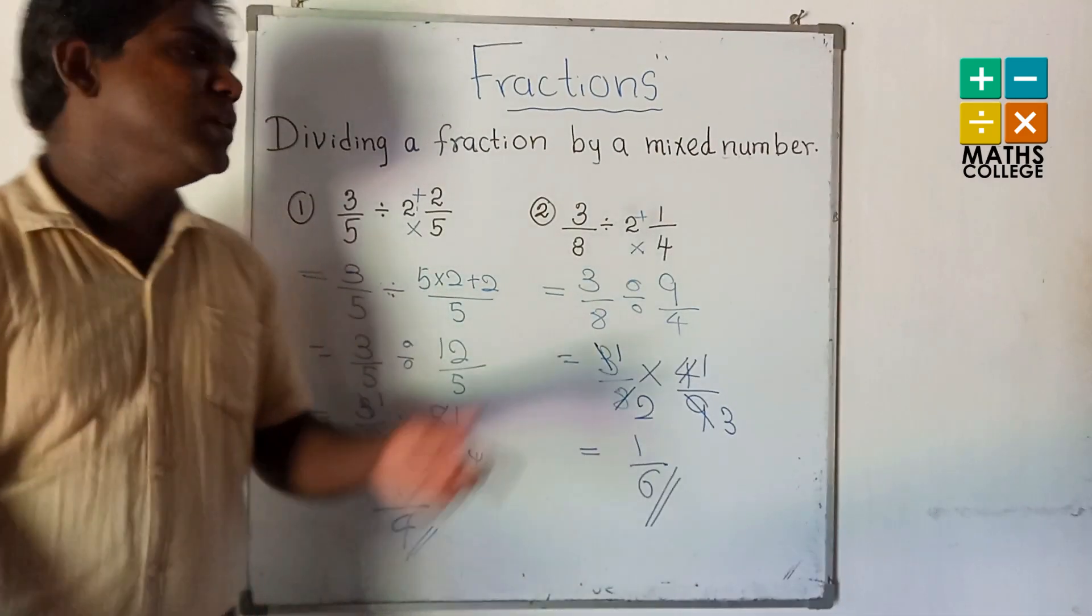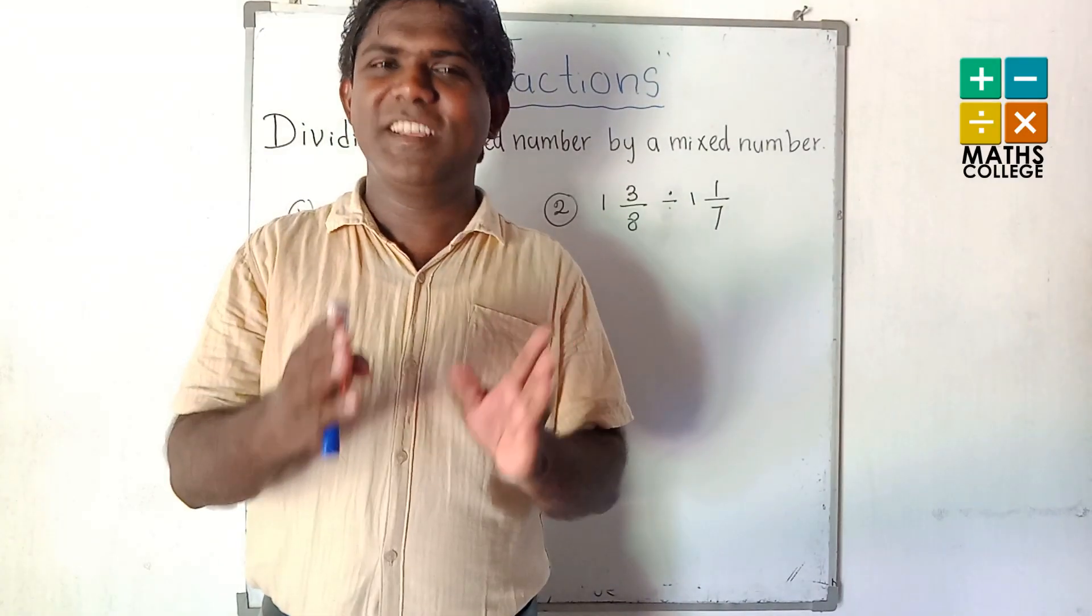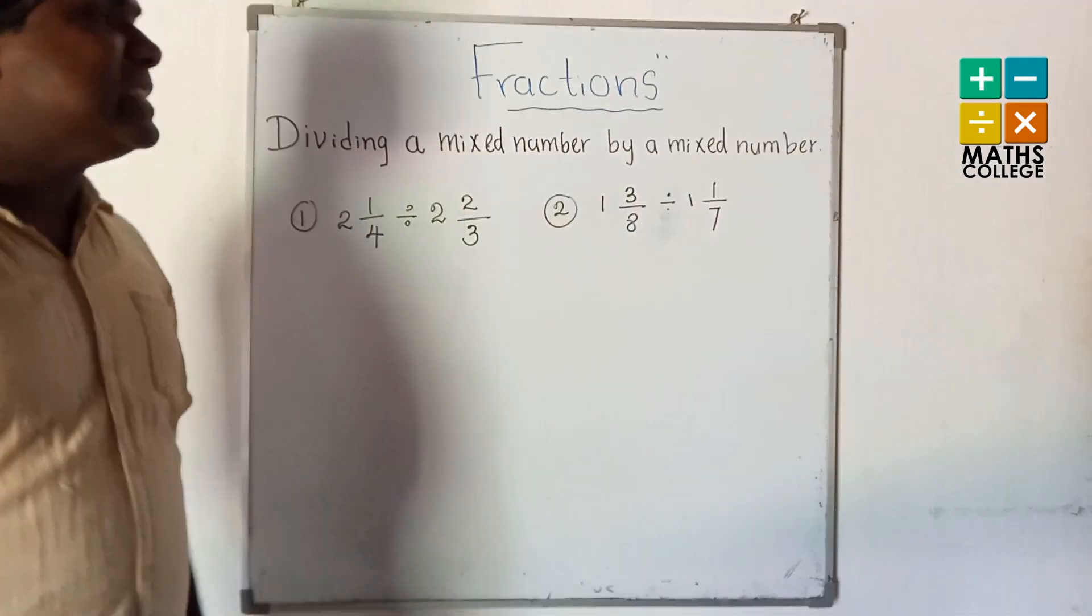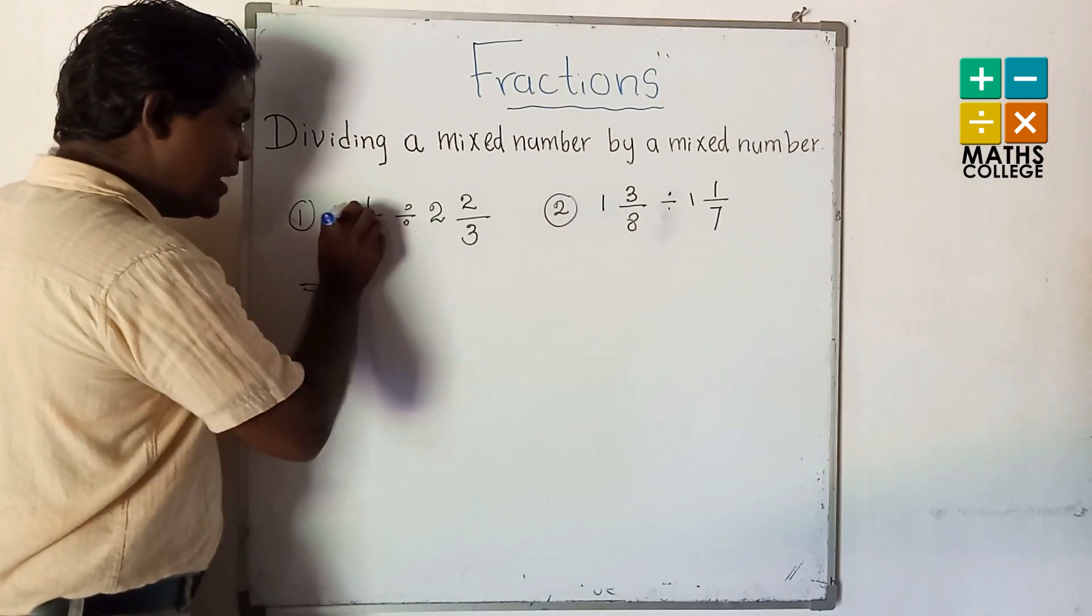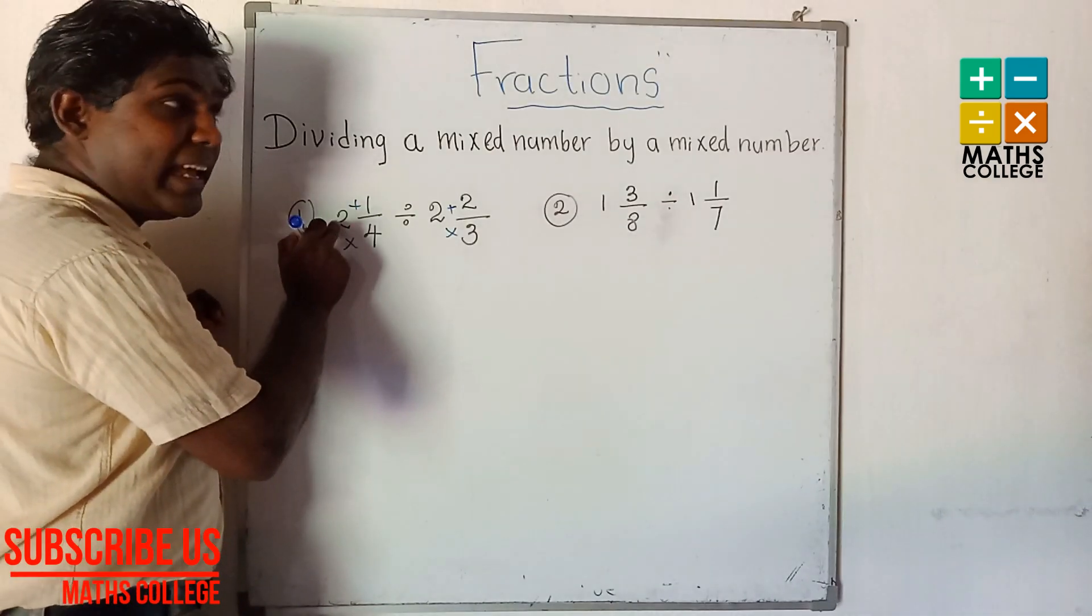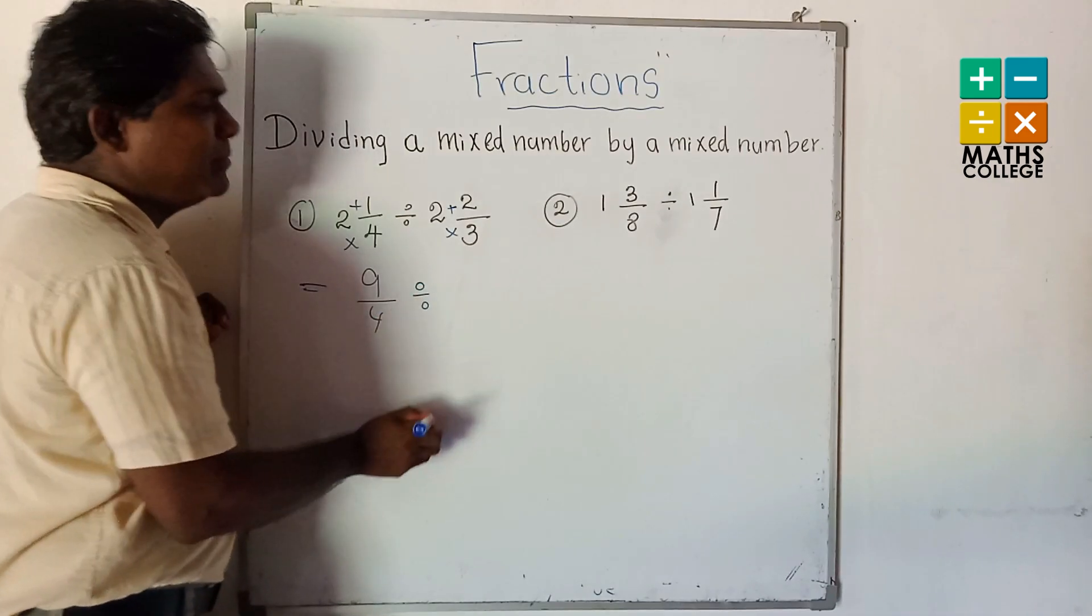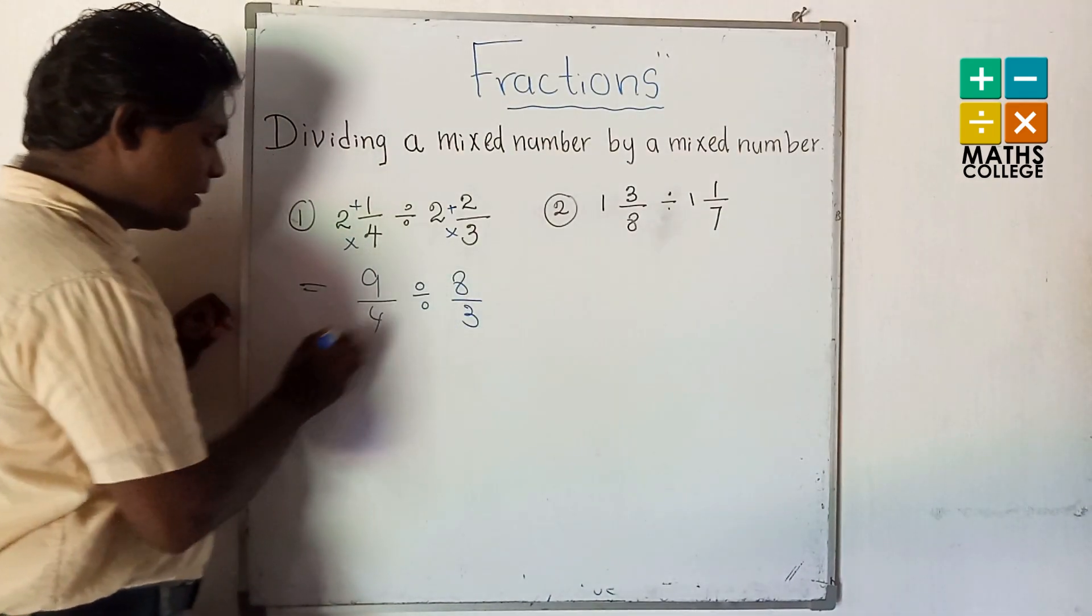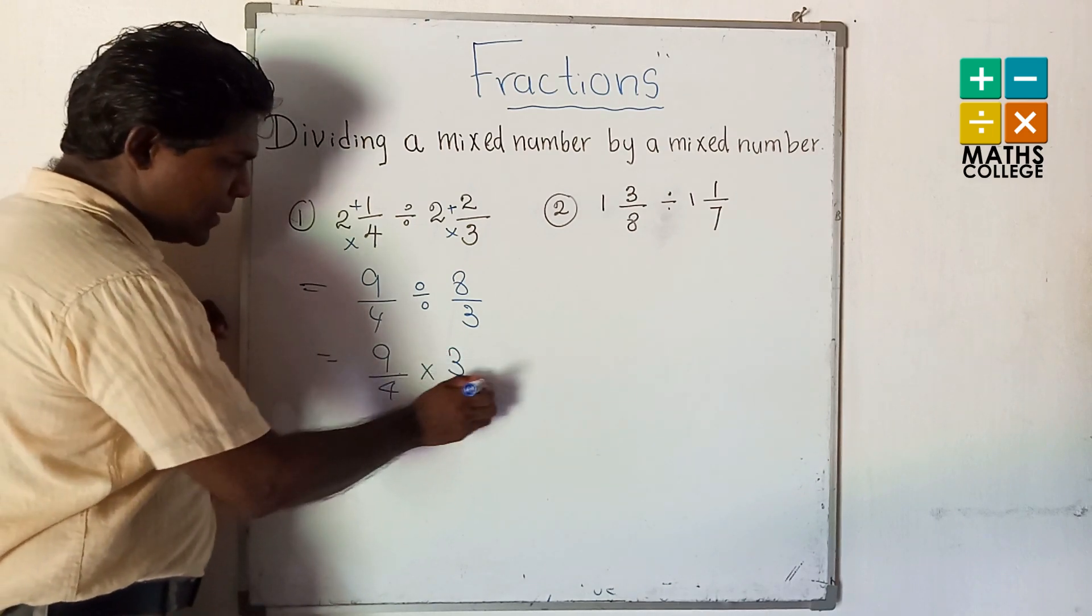Let's go to our last topic: dividing a mixed number by a mixed number. Multiply and add: 4 multiply 2 is 8, 8 addition 1 is 9 upon 4 divided by... 3 multiply 2 is 6, 6 addition 2 is 8 upon 3. So 9 upon 4 multiplied by 3 upon 8.